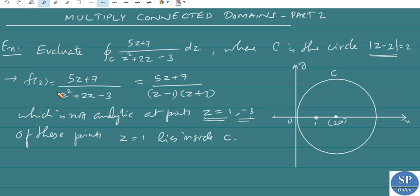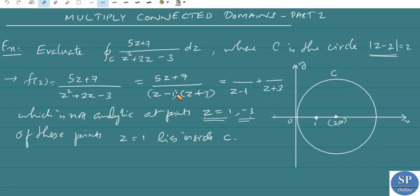Using partial fractions, f(z) can be written as something over (z - 1) plus something over (z + 3). To find the coefficient over (z - 1), we replace z = 1 everywhere else: (5×1 + 7) divided by (1 + 3) gives 12/4, that is 3.